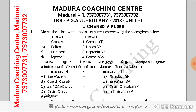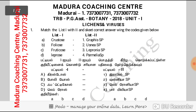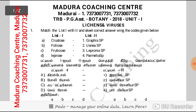Crustose lichen grows on soil, rock, and tree bark. Next one: Foliose lichen, meaning leaf-like lichen. Example, Parmelia — it has a leaf-like structure.